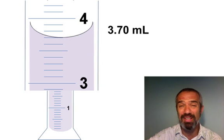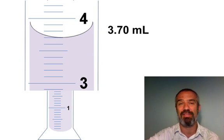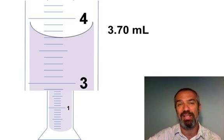If it looks like it's a little bit above it, you could say three point seven one. Looks like it's a little bit below it, three point six nine. But don't just leave it at three point seven because it looks like that's not precise enough. We're certain of the seven in this case and we're guessing the zero in the hundredths place.